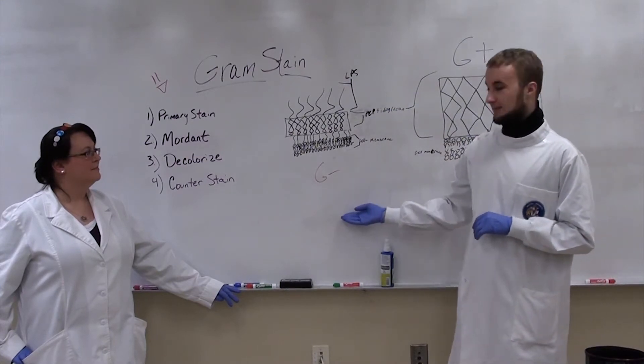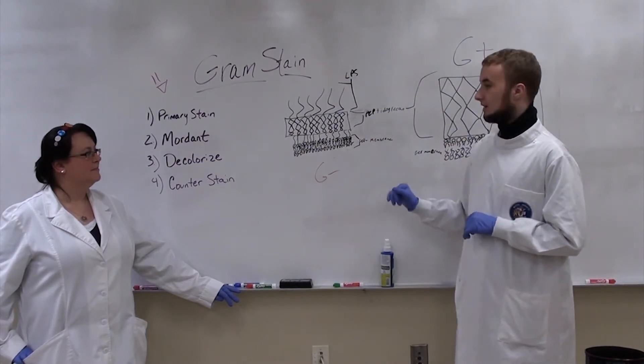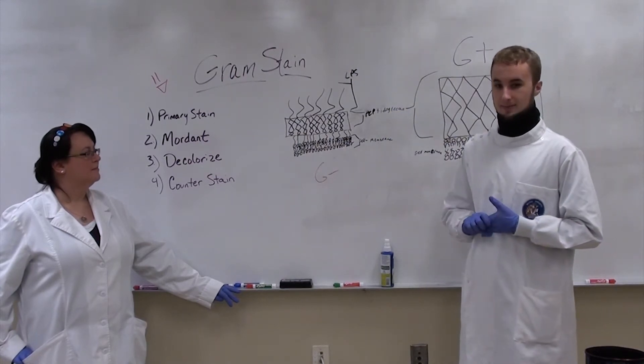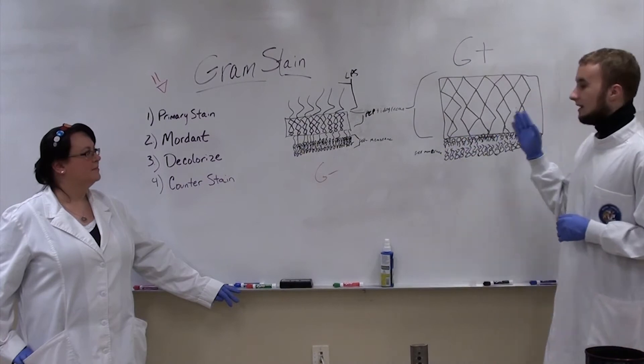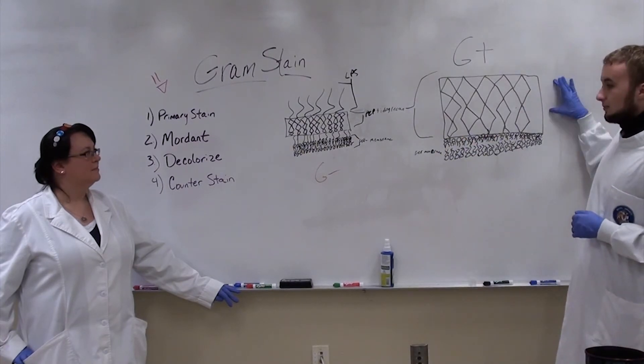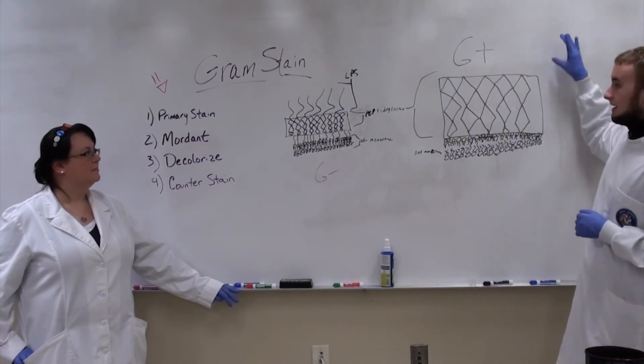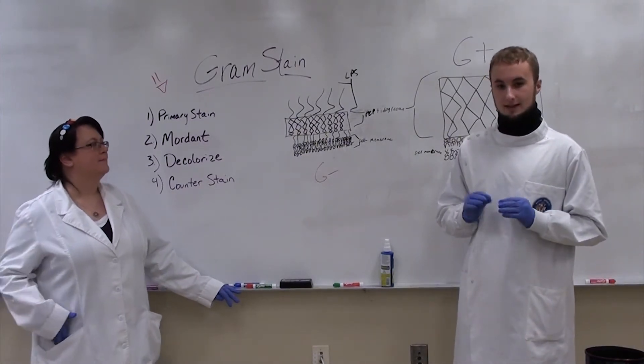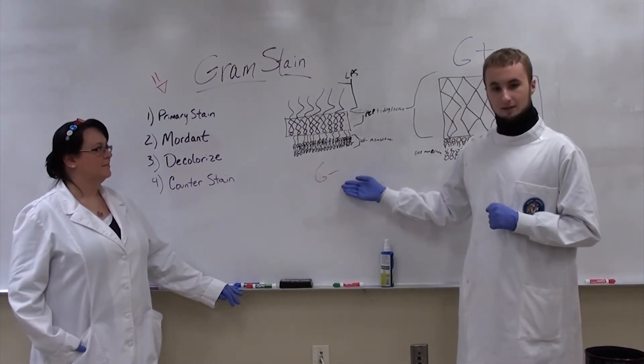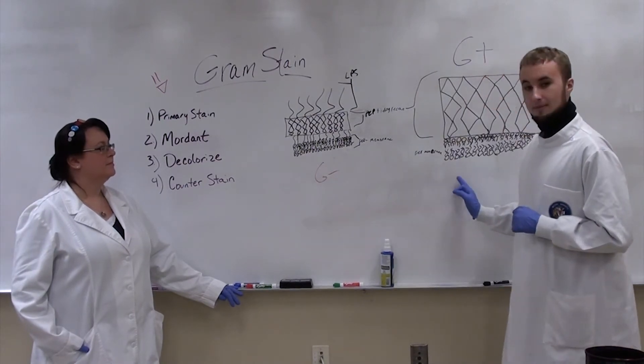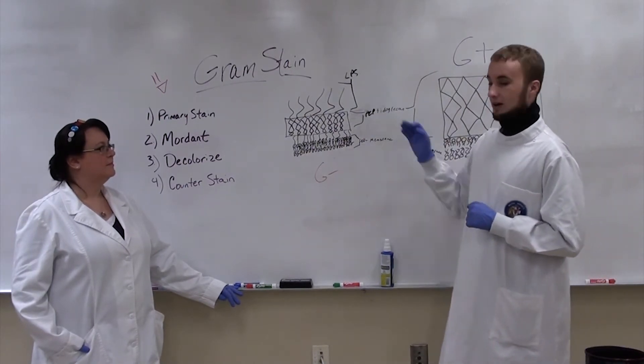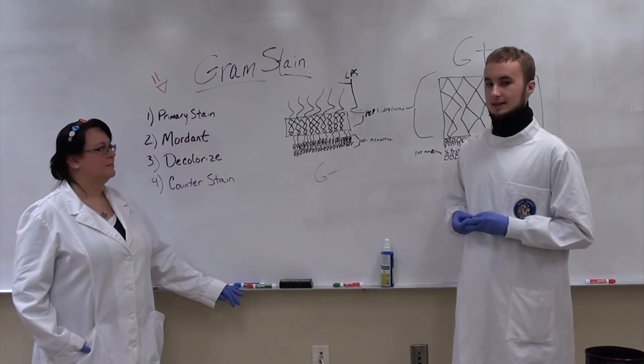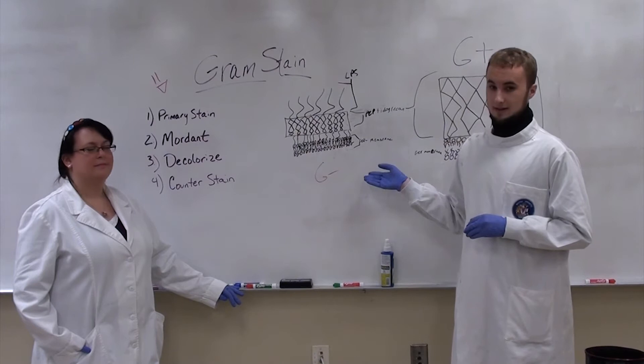Now, with gram-negative bacteria, which is shown over here, they have a thick LPS layer and a rather small peptidoglycan layer. Interestingly enough, gram-positive bacteria have a really thick peptidoglycan layer and no LPS at all. So when you're performing this differential stain, the idea is a gram-negative bacteria will dye a different color than the gram-positive bacteria based on the thickness of the peptidoglycan layer because it will interact with dyes in a different way and the decolorizing agent.